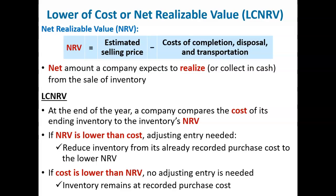The lower of cost or net realizable value approach avoids reporting inventory at an amount greater than the cash it can provide to the company. Reporting inventories this way causes income to be reduced in the period when the value of inventory declines below its cost, rather than in the period when the goods are ultimately sold.